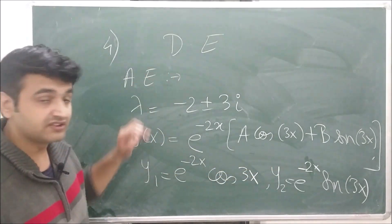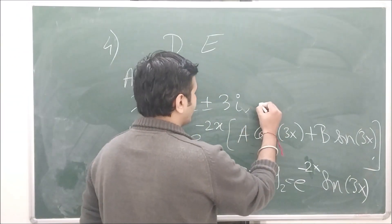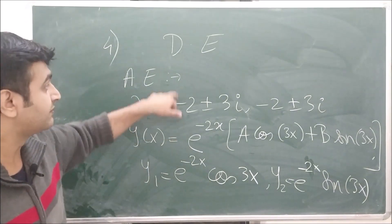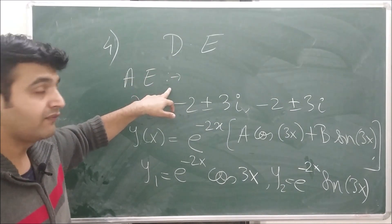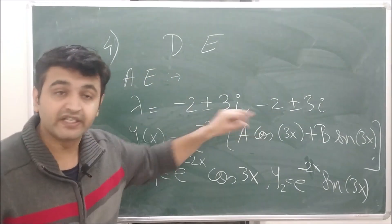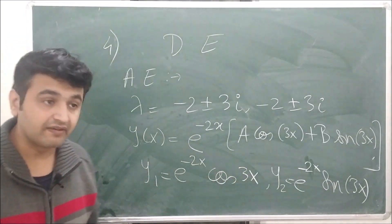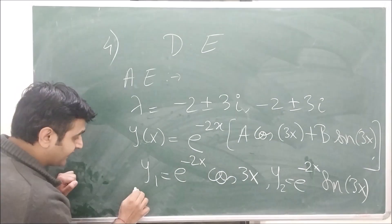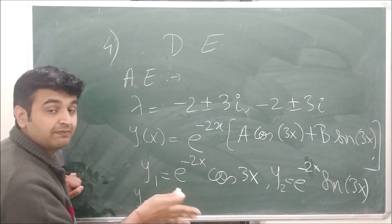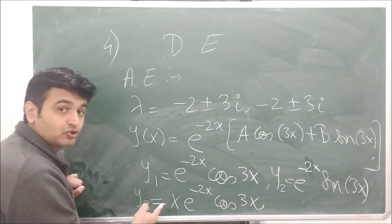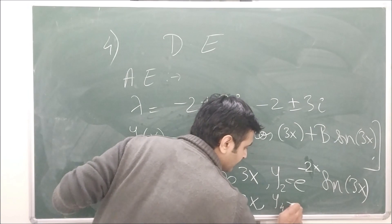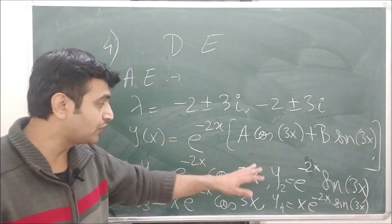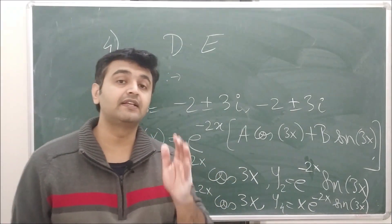Now suppose the complex roots −2 ± 3i are repeated twice, giving a fourth order differential equation. The first two solutions y₁ and y₂ remain e^(−2x)cos(3x) and e^(−2x)sin(3x). Since they repeat, you apply the same technique and multiply by x: y₃ = xe^(−2x)cos(3x) and y₄ = xe^(−2x)sin(3x). These four form linearly independent solutions for the fourth order equation.